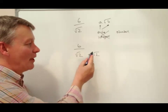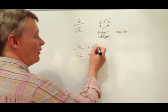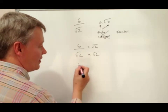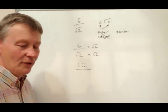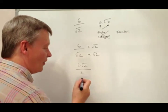However, because I've multiplied the bottom by root 2, I've got to multiply the top as well by root 2. So, let's just work that out. So, we've got 6 times root 2 is 6 root 2. And at the bottom, I've got root 2 times root 2, which is root 4, which is 2.